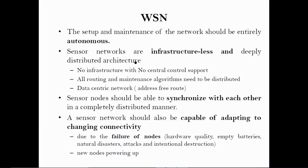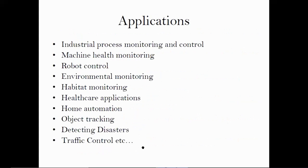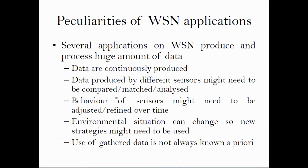Sensor networks are self-organizing and form on their own based on their wireless communication capability. They synchronize with each other in a completely distributed manner. The sensor node is also capable of adapting to changing connectivity in case of node failures — whether due to hardware quality, battery failure, natural disasters, attacks, intentional destruction, or addition of new nodes. That is why we call them autonomous. There are a lot of applications — generally grouped under two categories: to monitor the environment or to track the environment.